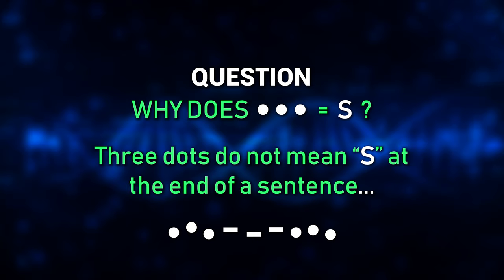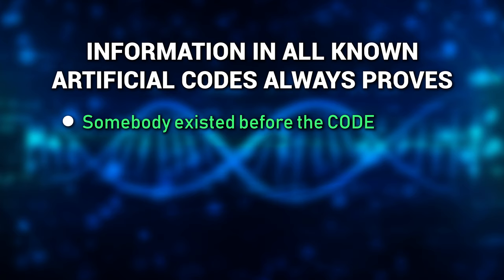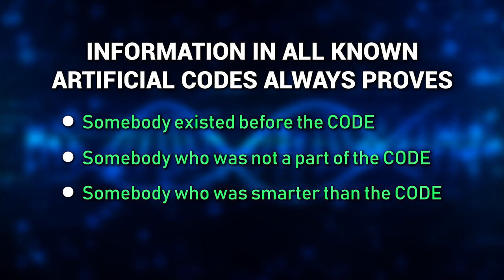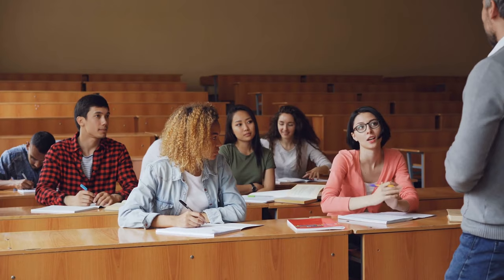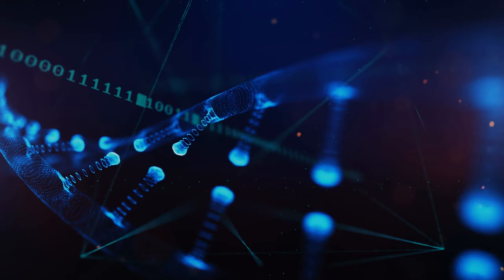Somebody existed before the code, somebody who was not a part of the code, and somebody who is smarter than the code. Now the audience can use this to talk to their teachers and professors and say, 'Would you agree this was created code — created by some intelligence?' But then, if that's created, what about the code of life?